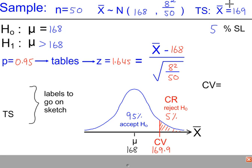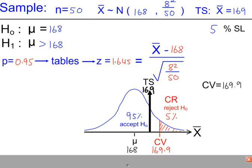Our test statistic is 169 here. So the test value is in the acceptance region. So we're going to accept H0 and conclude that there is no significant evidence that students are now taller.